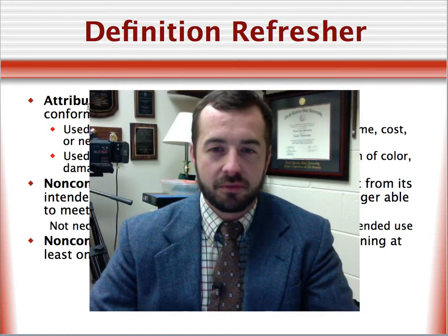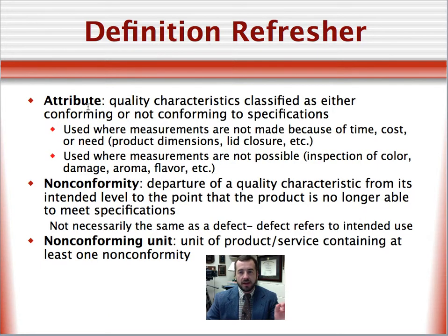This brings us to the definition of attribute. An attribute is a quality characteristic that can be classified as either conforming or non-conforming. We use attributes when measurements are not made because of time, cost, or need, or sometimes it's just not possible. Maybe we don't know what the quality characteristic is that we should be measuring yet. So this brings us to the definition of non-conformity. Non-conformity is simply speaking, the departure of a quality characteristic from its intended level to the point that the product is no longer able to meet specifications. So this is when the point on the control chart, for example, is outside of the specification limits.